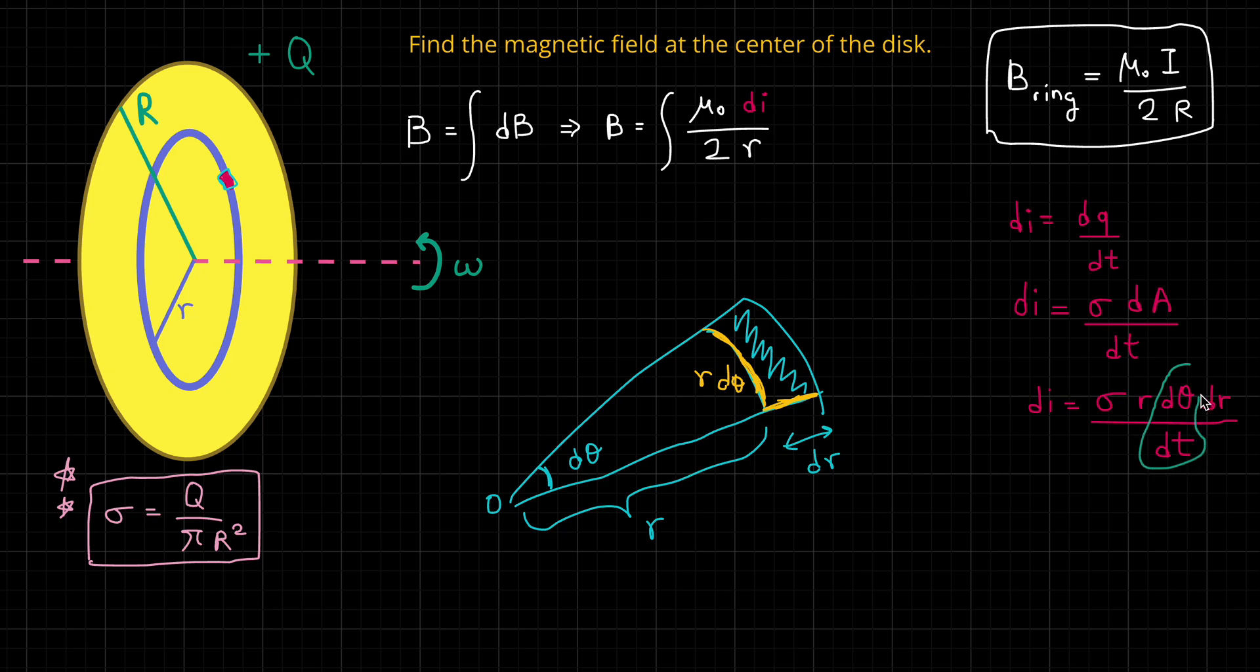d theta over dt. What is it? By definition, this is omega, the angular speed. How? Well, d theta over dt is really angular displacement per unit time, which by definition is equal to angular speed. And that's already a given variable in our problem, that's omega. So in the next step, let's rewrite this expression with omega substituted for d theta over dt. And then we'll go back to our integral.